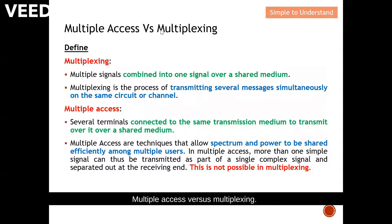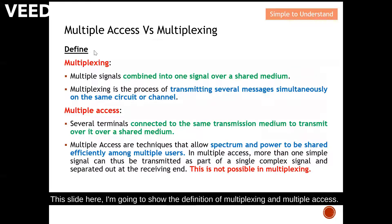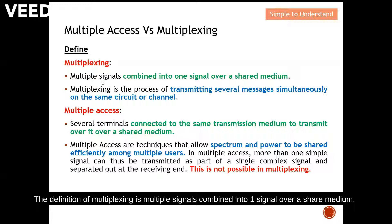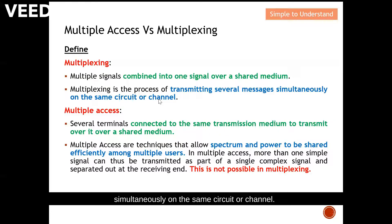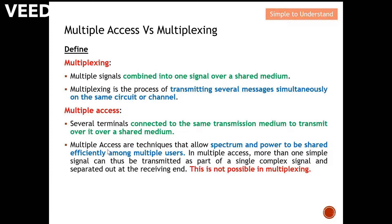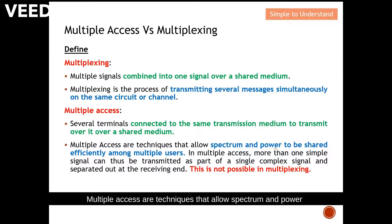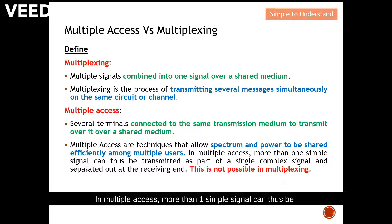Multiple access versus multiplexing — let's start with the definition of multiplexing. Multiplexing is defined as multiple signals combined into one signal over a shared medium. It is also defined as the process of transmitting several messages simultaneously on the same circuit or channel. For multiple access, the definition is: several terminals connect to the same transmission medium to transmit over it. Multiple access techniques allow spectrum and power to be shared efficiently among multiple users, where more than one signal can be transmitted as part of a single complex signal.